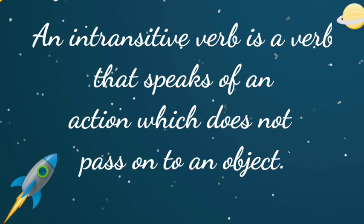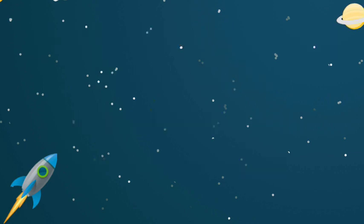Next, let's look at intransitive verbs. An intransitive verb is a verb that speaks of an action which does not pass on to an object. It does not answer the question 'what.' Instead, it answers the questions why, when, where, and how. An intransitive verb does not take an object.